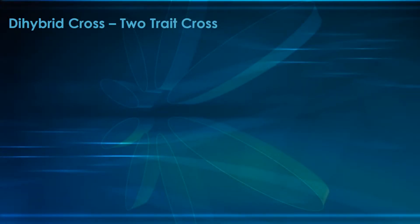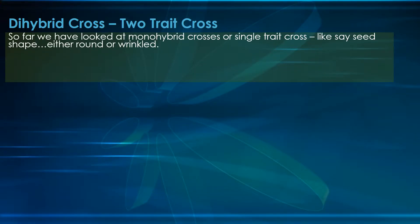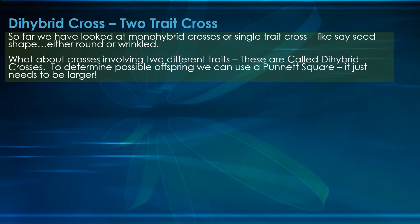We're going to look at something called a dihybrid cross — this will just be an intro to it. It is indeed a two-trait cross. So far we've looked at monohybrid crosses, or just single-trait crosses, like seed shape, which could be either round or wrinkled. What about crosses involving two different traits? These are called dihybrid crosses. To determine the possible offspring, we can also use a Punnett square — it just needs to be a little larger.